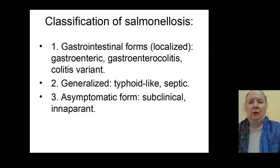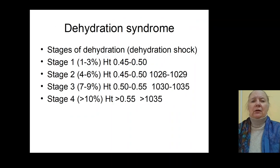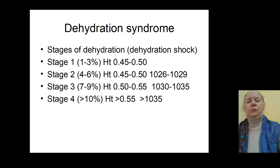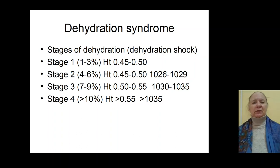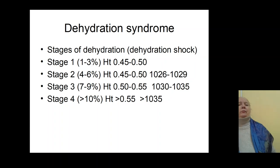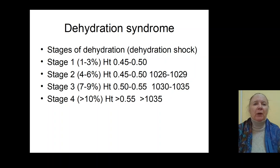The syndrome of gastritis, gastroenteritis, gastroenterocolitis, and enterocolitis cause formation of the syndrome of dehydration. There are four stages of dehydration and two stages of dehydratory shock. The first stage of dehydration is characterized by the patient losing from 1 up to 3% of body mass, hematocrit of 0.45 up to 0.48, with no clinic of dehydration — sometimes only thirst. This is seen in mild forms of Salmonellosis.